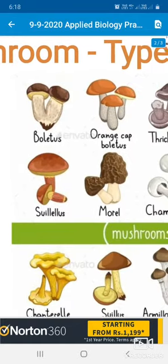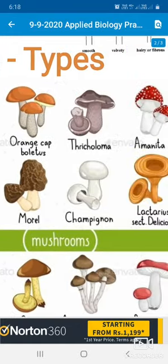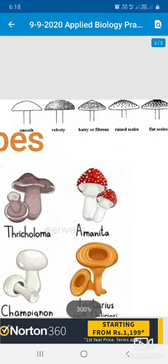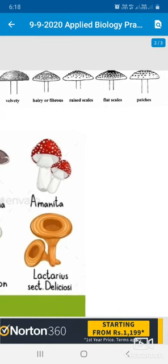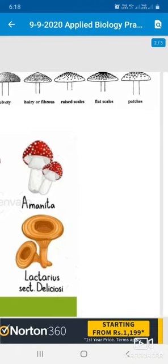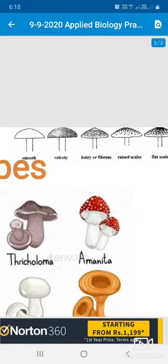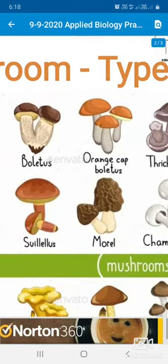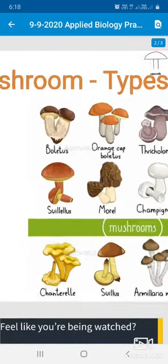Now I will move on to types of mushrooms. The picture shows the upper side — the cap can be black and white, smooth, velvety, hairy, and fibrous, with raised scales. Some mushrooms have flat scales and some have patches. These are the basic morphological surface types of mushrooms.